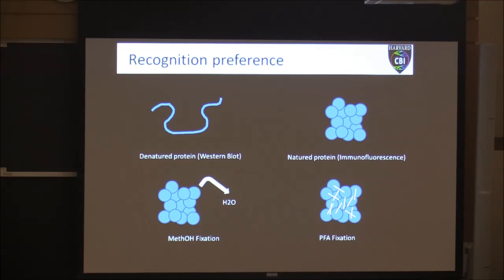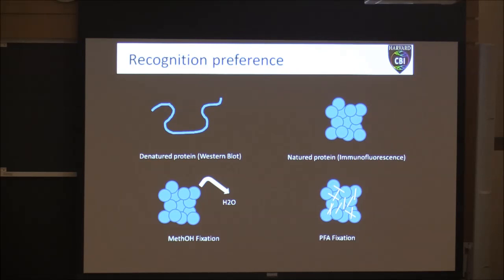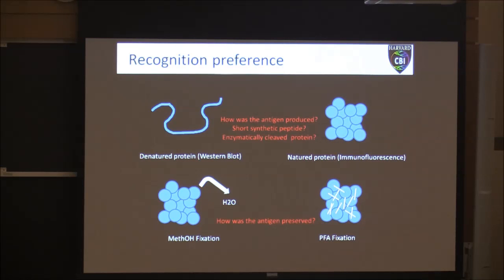So for that series of experiments I had to do everything in duplicate — fix cells both in methanol and paraformaldehyde. Some antibodies prefer to recognize cross-linked proteins fixed with paraformaldehyde, and some like to see proteins that have been dehydrated. Again, a lot of this comes back to how the antibody was actually produced in the first place.